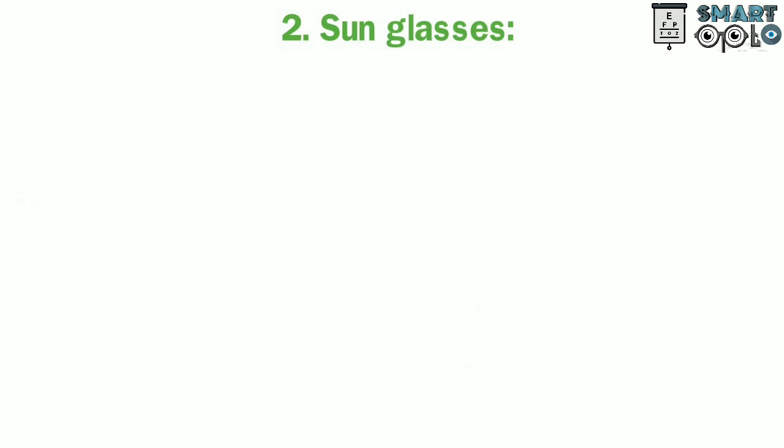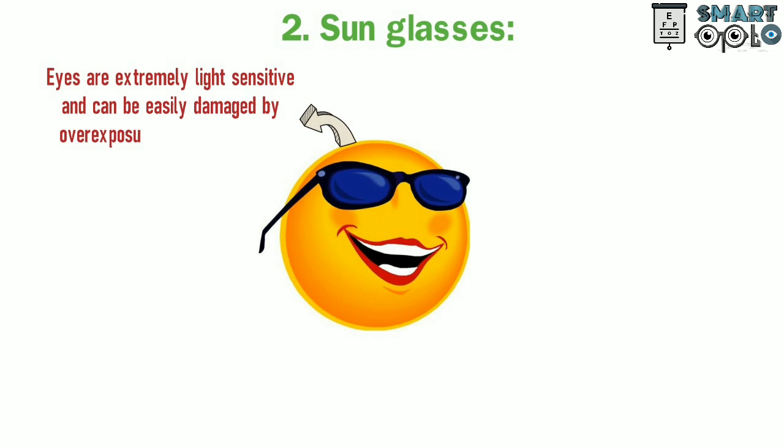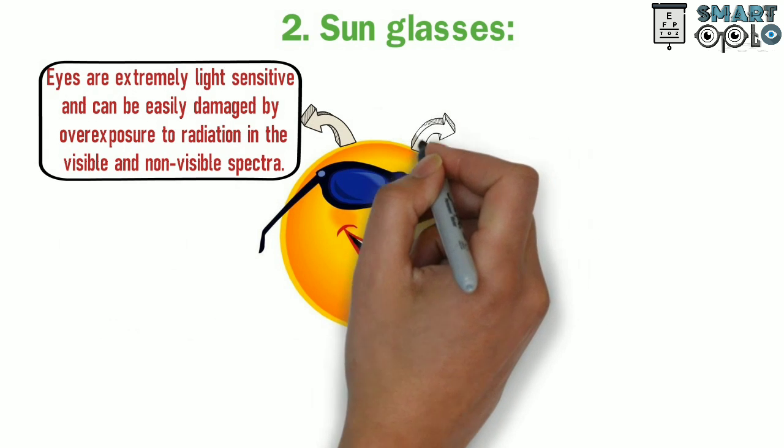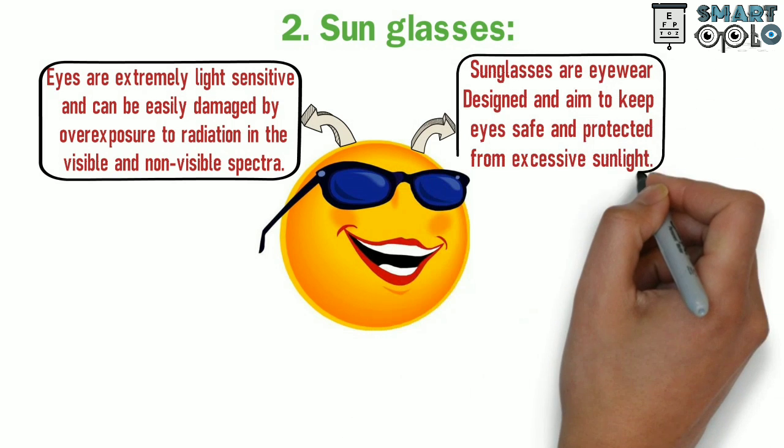The second type of special glass is sunglasses. Eyes are extremely light sensitive and can be easily damaged by overexposure to radiation in visible and non-visible spectra. Sunglasses are eyewear designed and aimed to keep eyes safe and protected from excessive sunlight.